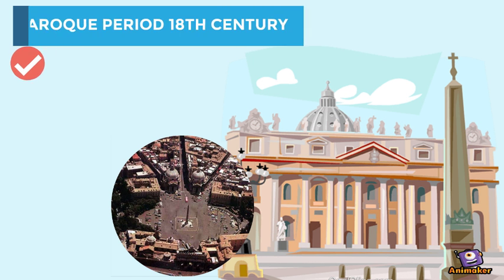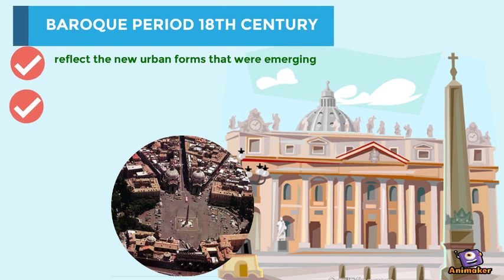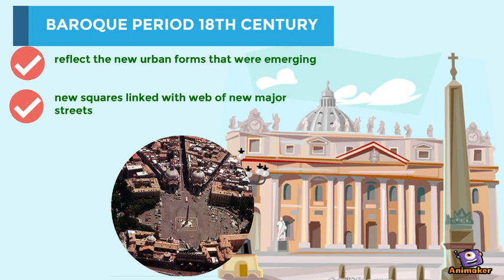The renewal during the Baroque period in Italy integrated public squares and churches, having three major roads branching from each square to symbolize the Holy Trinity.